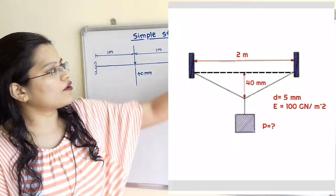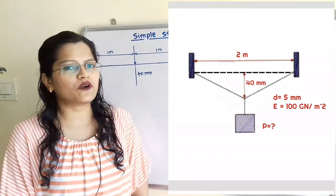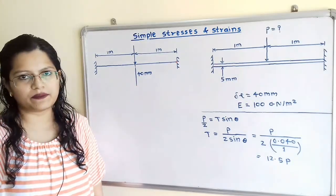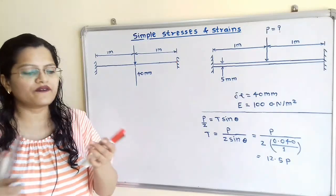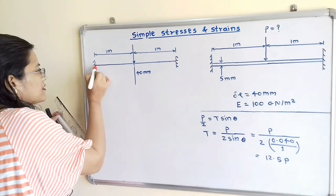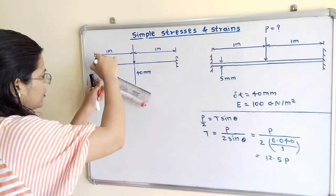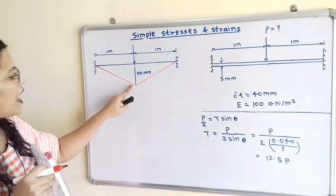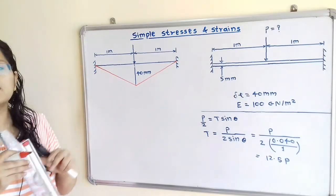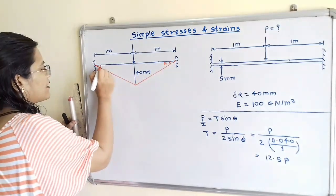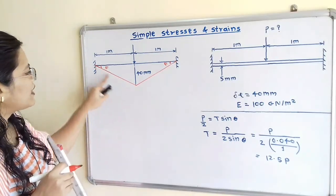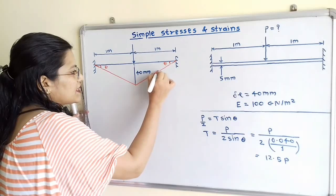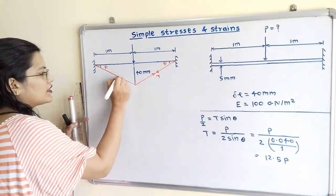We have to find out the magnitude of the applied load P. We will first draw the free body diagram. When we apply load P at the midpoint, there is a deflection equal to 40 millimeter. This is the horizontal position of the wire. Now we will show the final position of the wire. The wire will rotate about the fixed support. Each half portion of the wire is deflected through an angle theta about the fixed support. Due to deflection, tension T is produced in the wire, equal in magnitude but opposite in direction for each half portion.